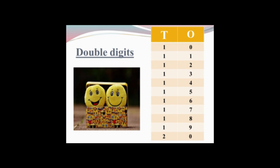The next number is 1 1 — 11. This is also a double digit number. Next is 1 2 — 12. 1 3 — 13. 1 4 — 14. 1 5 — 15. 1 6 — 16. 1 7 — 17. 1 8 — 18. 1 9 — 19. And 2 0 — 20.